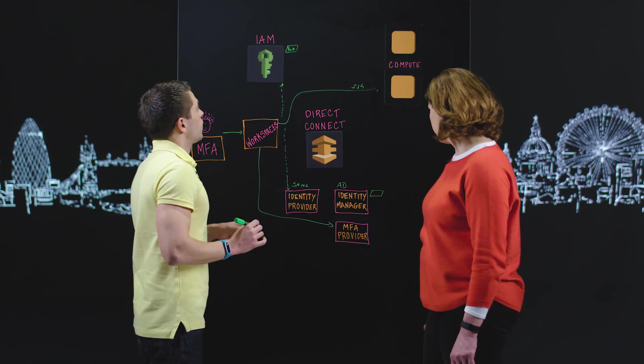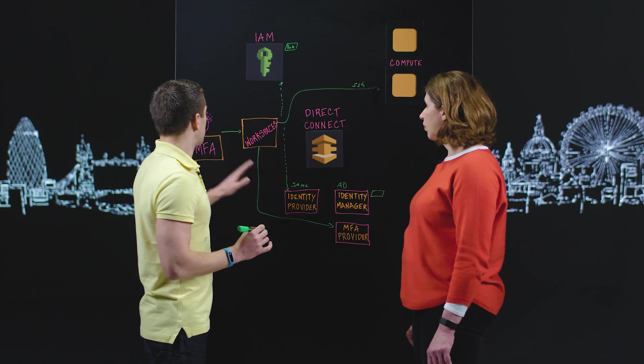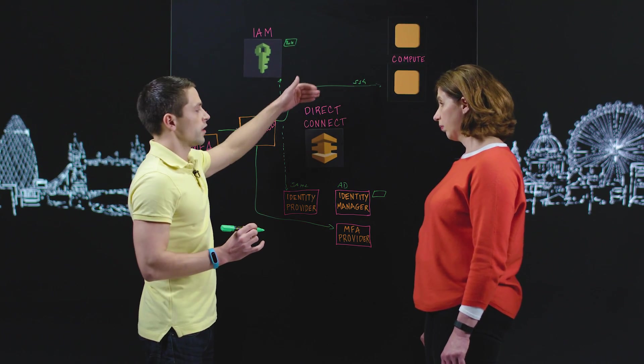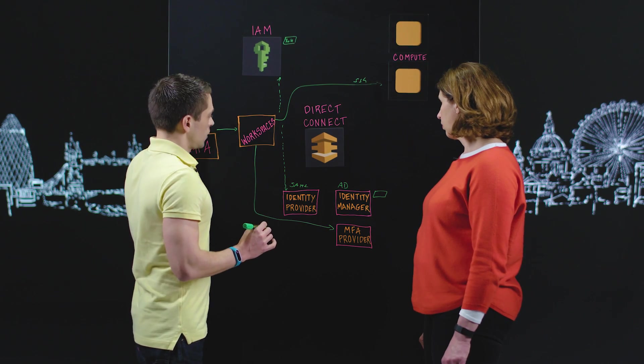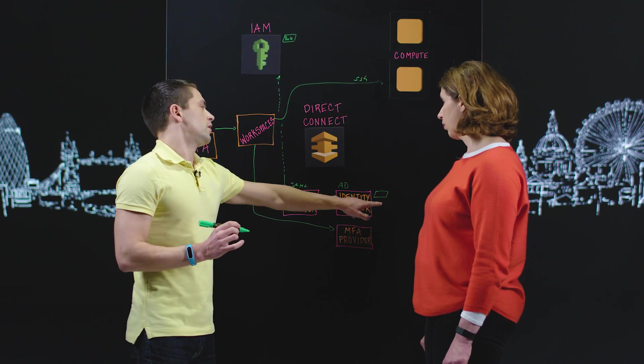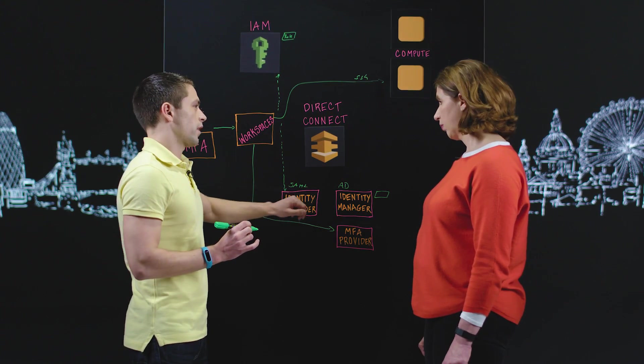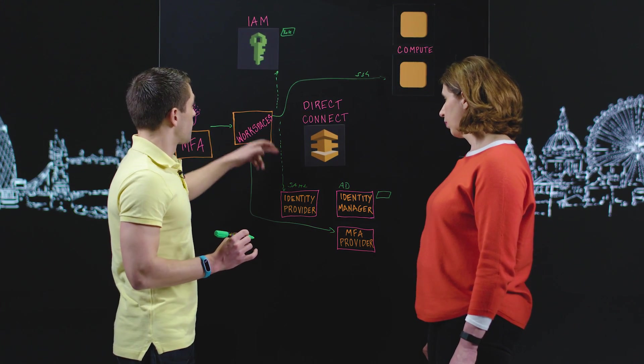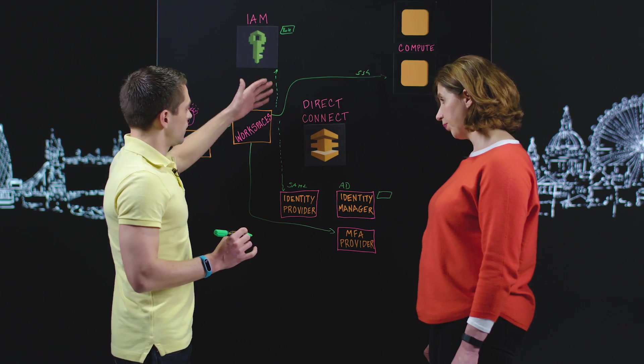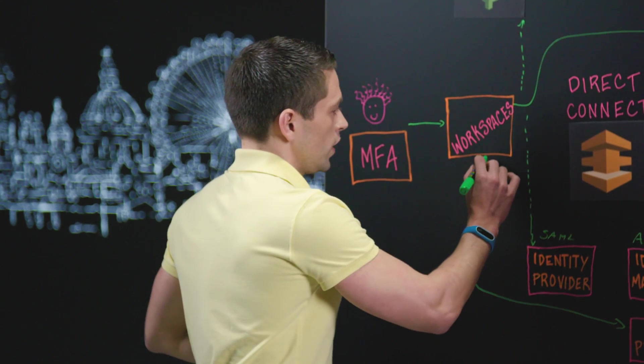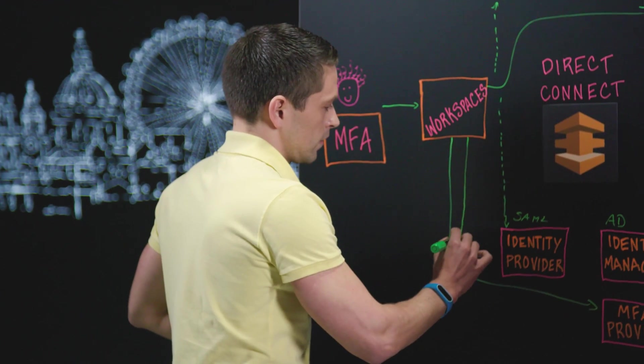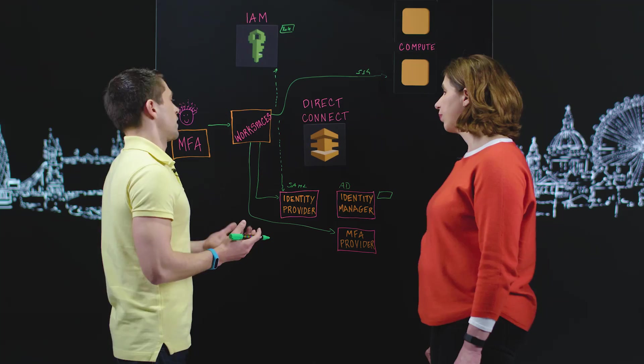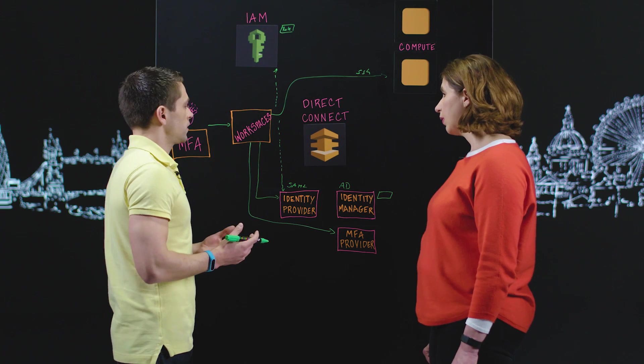As soon as we want to have access for one administrator into this role, that means into this AWS account, this administrator gets this role connected in Active Directory. Yeah. And when he tries to access the AWS console, for example, the administrator is redirected to our identity provider. Right. There he authenticates, or he gets an SSO when he connects from workspaces.